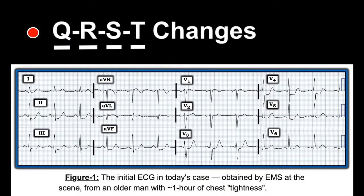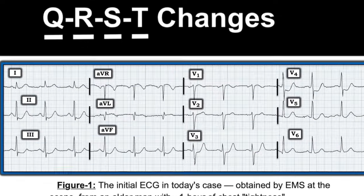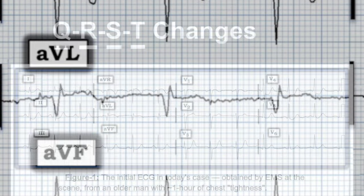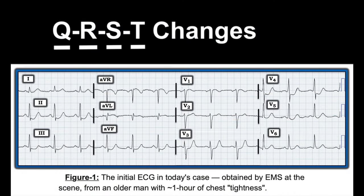Now we are up to QRS-T changes. Are there any Q waves? Lead AVR doesn't count since it looks away from the heart. But there is a really large, wide Q wave in one lead — especially notable given the small R wave. Looking at all other leads, it is the only Q wave. For R wave progression, the R wave gets progressively taller and exceeds the S wave between V3 and V4 — that is normal progression.